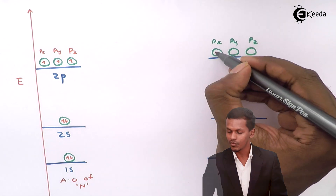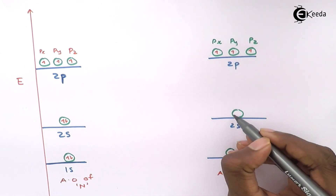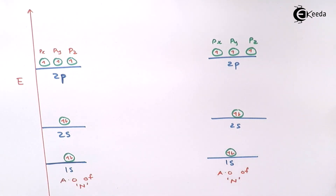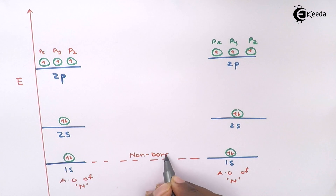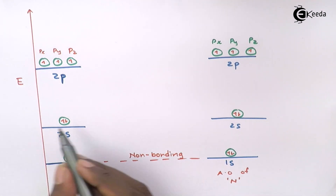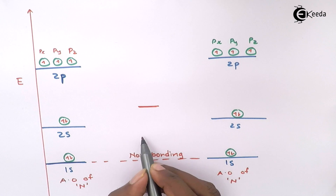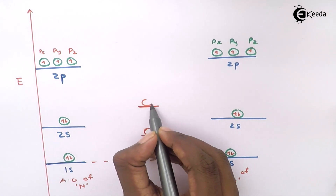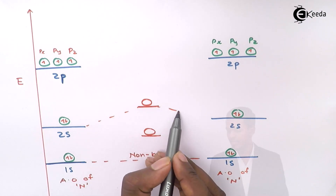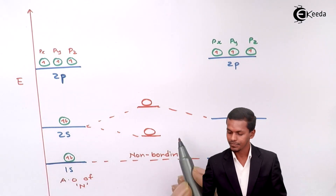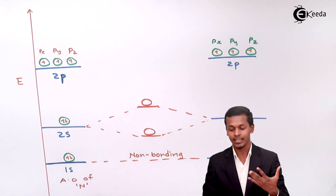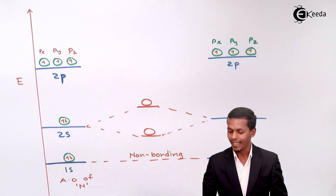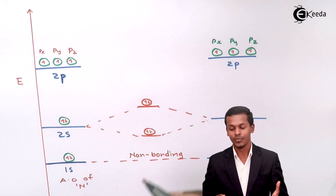We fill the electrons similarly for the second nitrogen atomic orbital. The 1s is responsible for giving a non-bonding orbital. For the 2s level there will be 2 energy levels, each consisting of one orbital — a bonding orbital and an anti-bonding orbital — making a total of 4 electrons in the 2s level. That is how we fill the electrons.